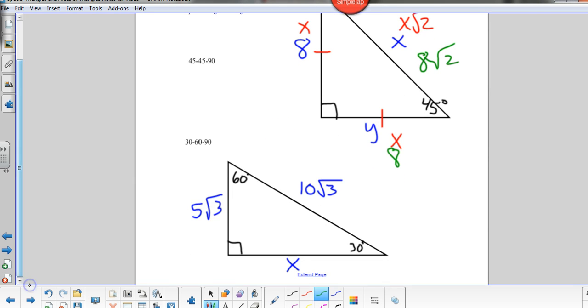And the 30-60-90 below, I made the small leg 5 root 3. So the hypotenuse is double that, it's 10 root 3. That's twice as big as this one. And this one should be whatever this is times the square root of 3. So if it's x root 3, and x in this case is the short leg, is 5 root 3, so it becomes 5 root 3 times root 3, which is 5 times root 9, or 5 times 3, or 15. So this would be 15 there. And we'll do some practice here in class.